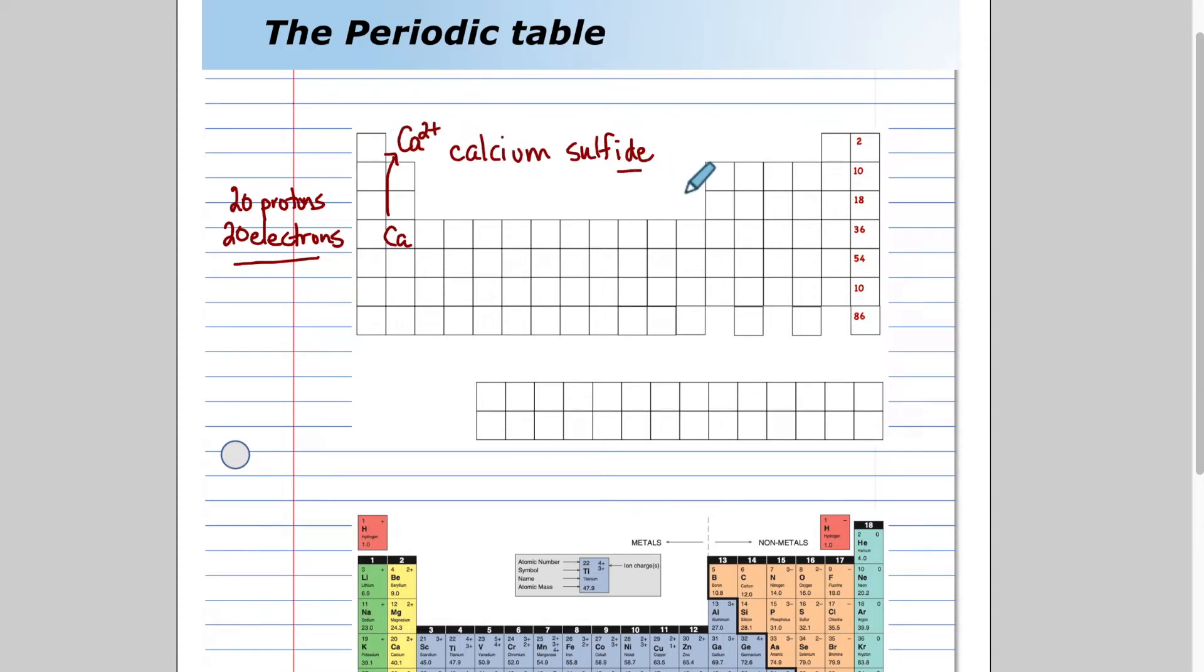Now sulfide is referring to sulfur, which is located right there on the periodic table. 16 protons and 16 electrons because sulfur is neutral as an element. But sulfur wants to gain two electrons to be more stable, like the noble gases. Sulfur becomes a two minus ion. Because if you gain two electrons, you become more negative, two negative.